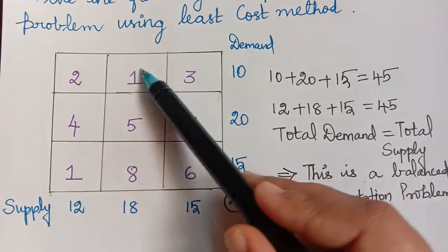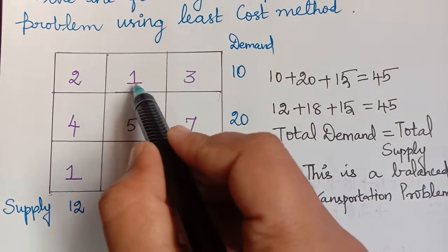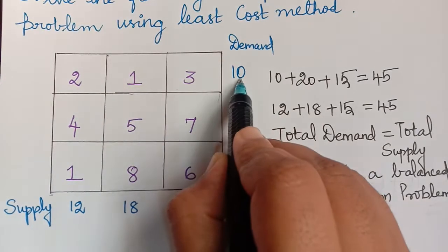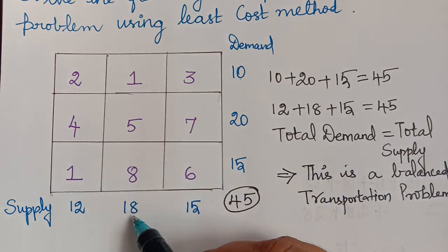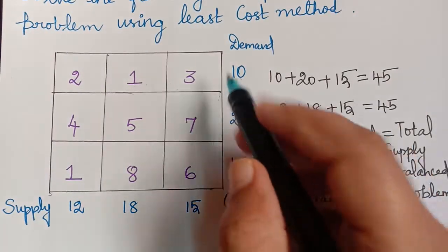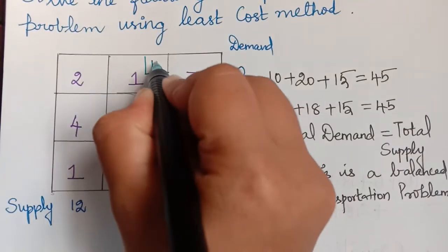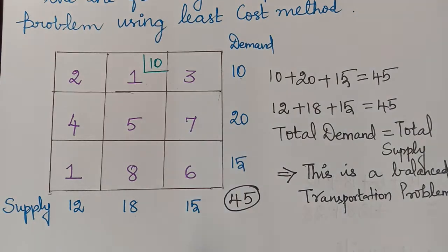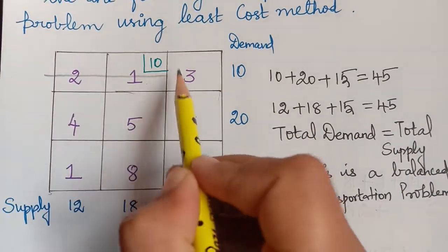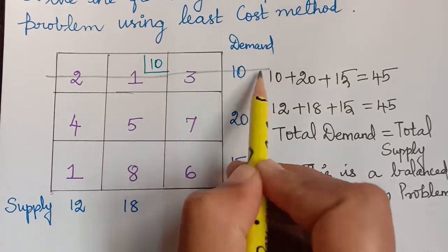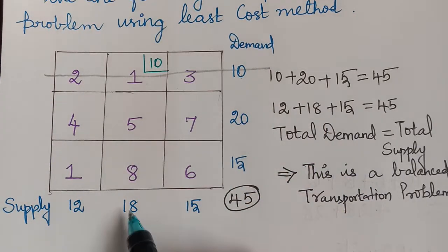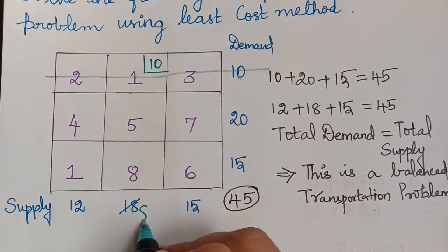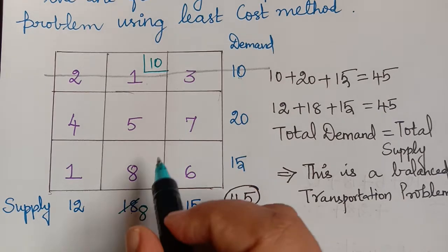Since both 1s appear in different rows and columns, we can start with either. I am arbitrarily choosing to give the allotment to this cell first. The demand here is 10 and the supply is 18, so the minimum is 10. We give the allotment of 10, strike off that complete row, and subtract 10 from 18 to get the remaining supply of 8.